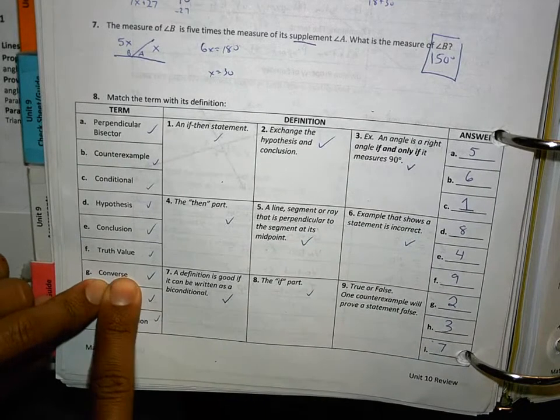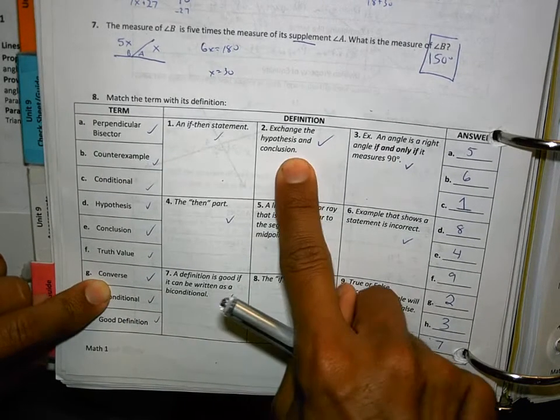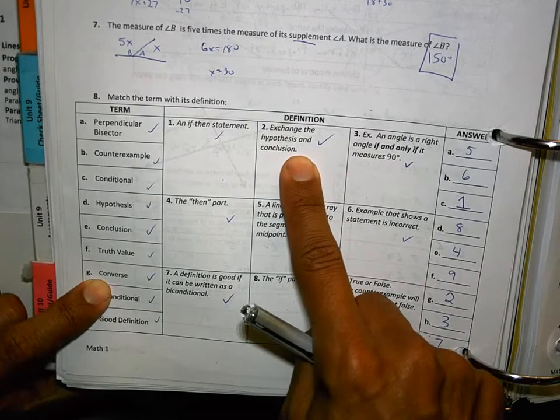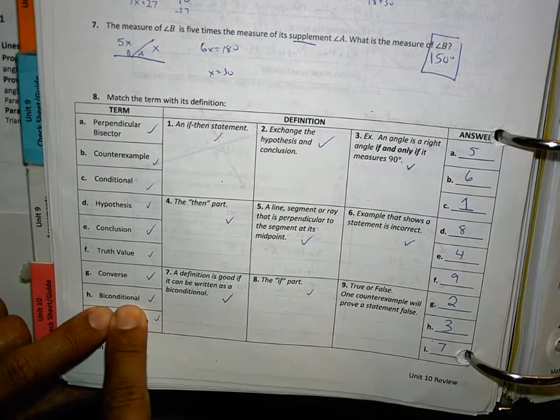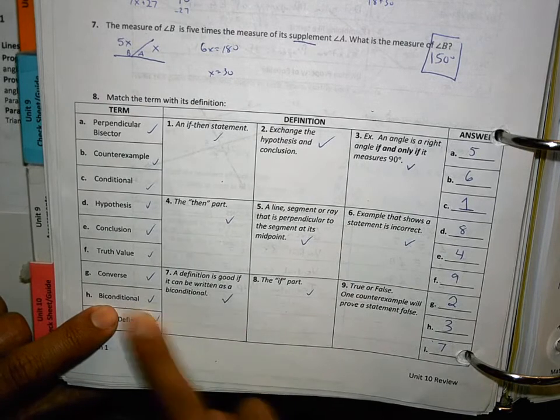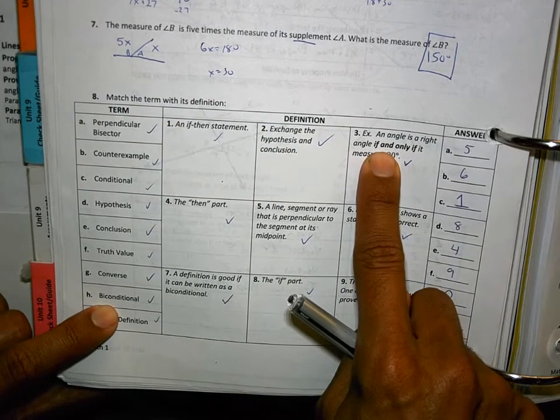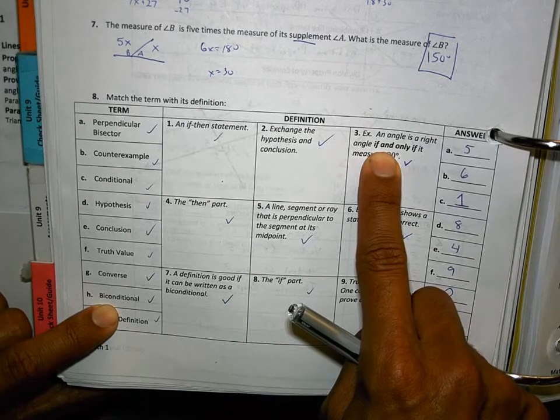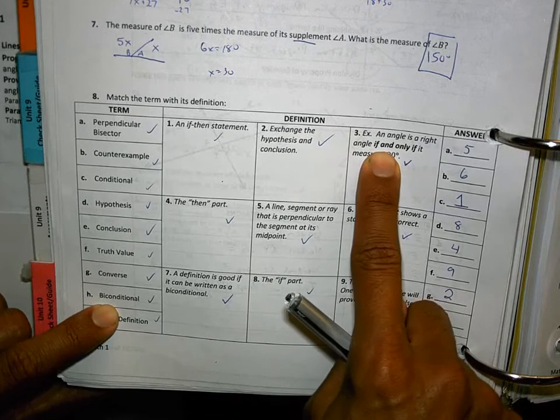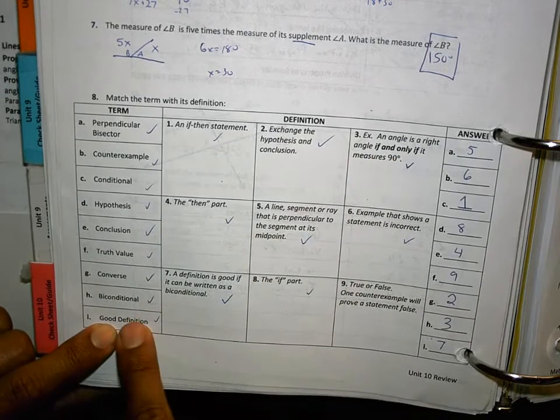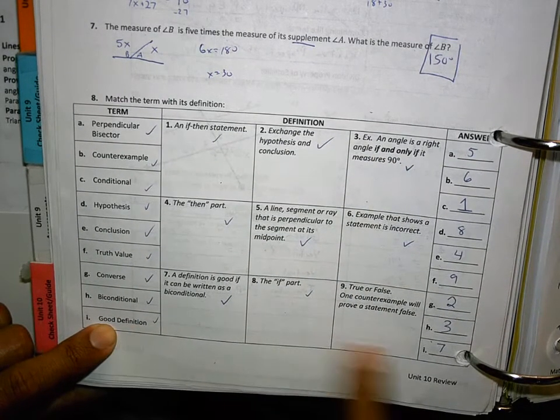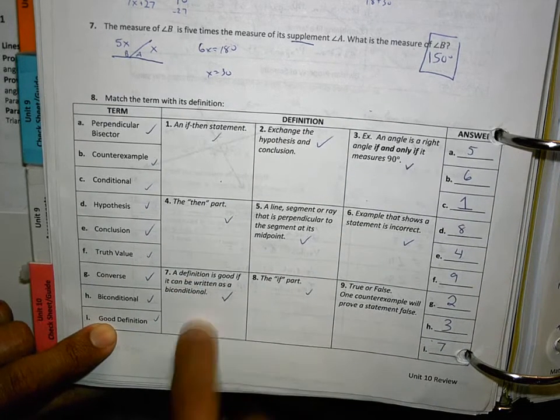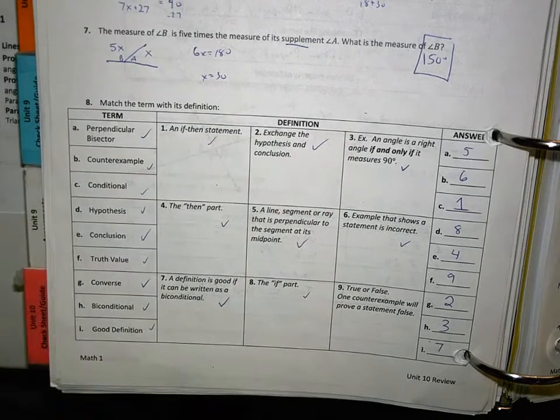G, what's the converse? The converse is an exchange in the hypothesis and conclusion. It's where you change the if and the then. Biconditional carries specific words. It carries the if and only if. If and only. We can abbreviate that to IFF when you're writing out your own. Lastly, a good definition is I. And I is number 7. A good definition is good if it can be written as a biconditional. Keep that in mind. Those were those terms on that page.